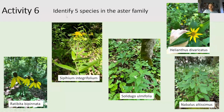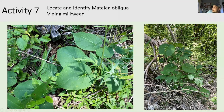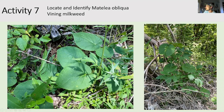Activity seven: locate and identify Matelea obliqua, the climbing milkweed. This was found all over the glade — look for a vine with a cordate leaf base. It might be out of bloom now but mostly look for this vining plant with a cordate leaf base. It actually used to be a listed species but has been delisted, and it really likes these open glade settings. You can see some leaves of Ratibida and Helianthus divaricatus in the same photo, along with some obedient plant — that's a fun photo.